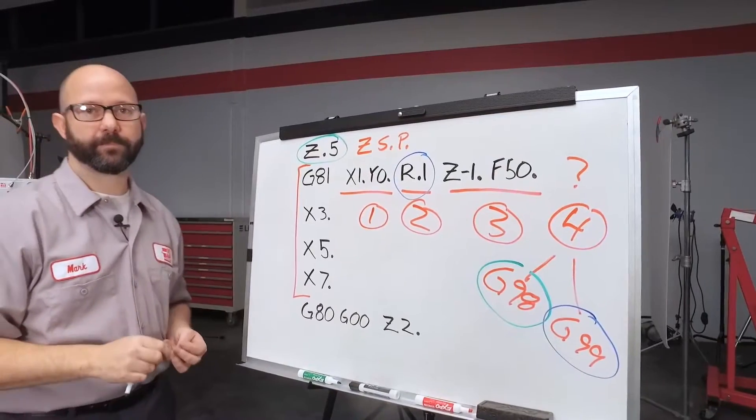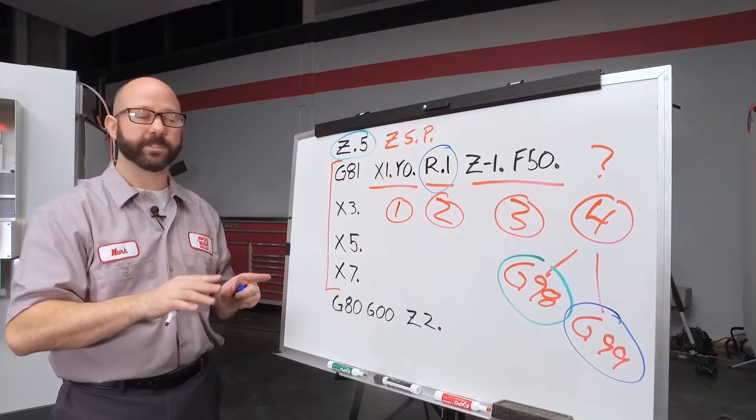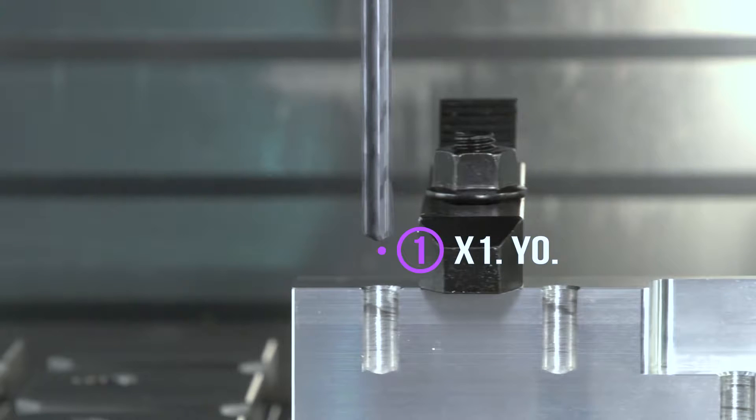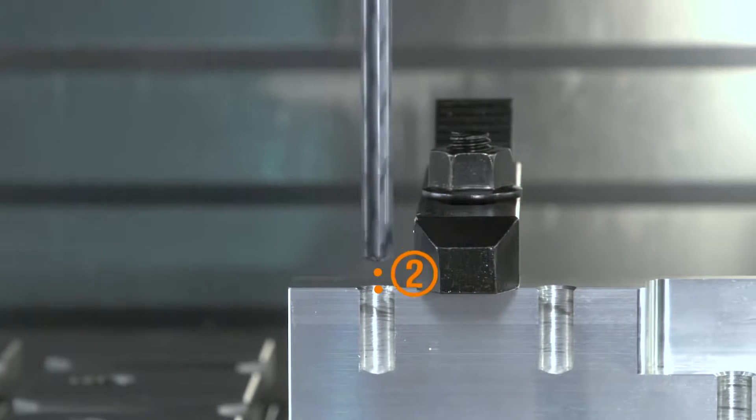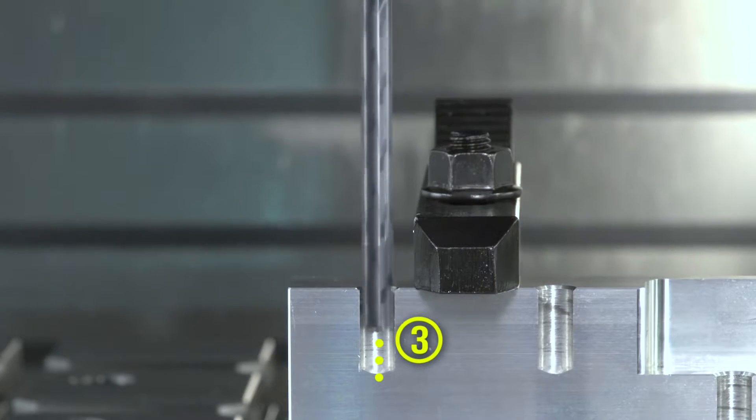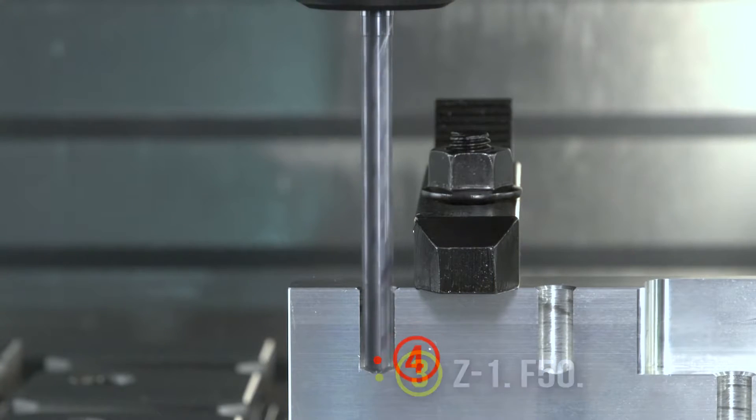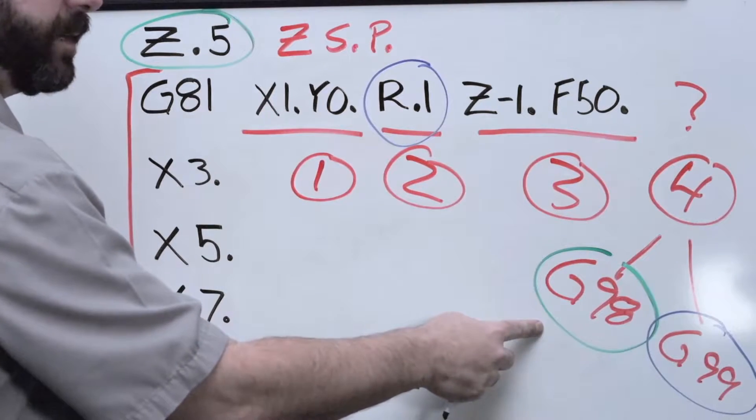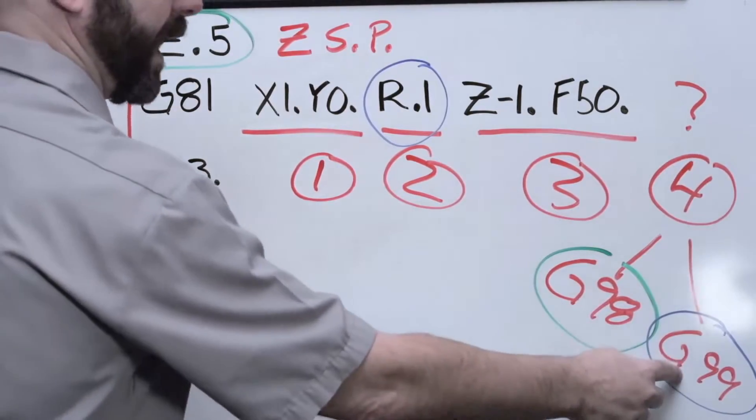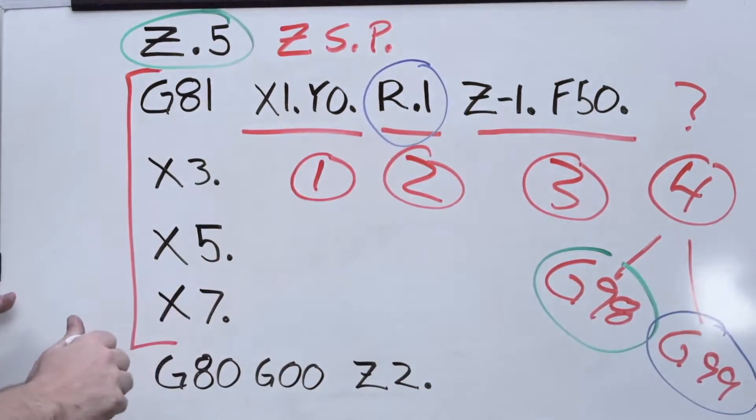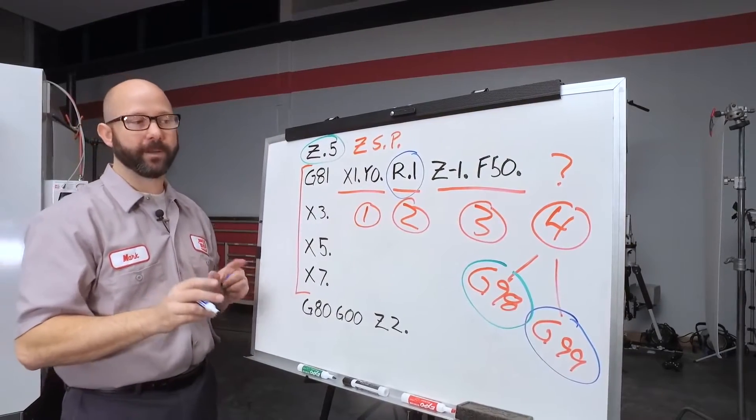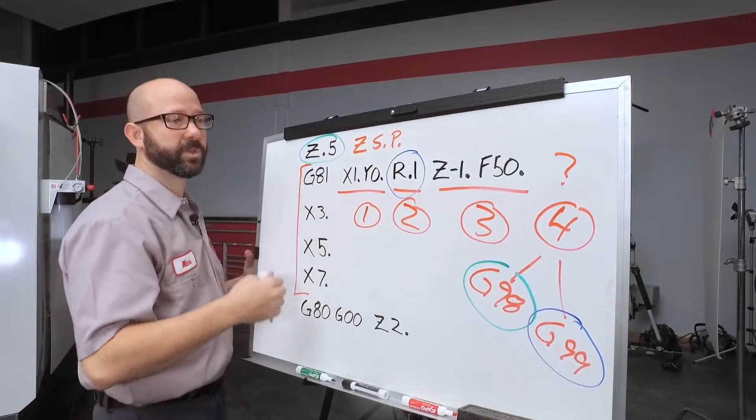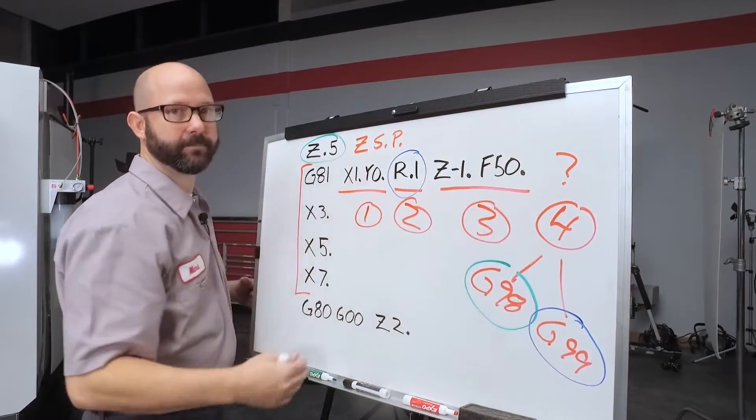To recap, the control is going to use the same order of operations for all these holes. One, two, three, four. First, it's going to position the XY. Second, it's going to rapid to the R plane. Third, it's going to feed to our Z depth. And fourth, it's going to either rapid back to our Z starting position if a G98 was commanded, or it's going to rapid back to our R plane if a G99 was commanded. Now, it's worth noting that G98 is used by the control by default. So even though we haven't commanded a G98, we're still using it.